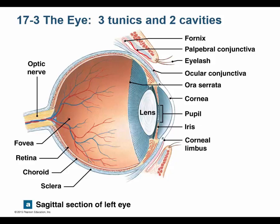You do have conjunctiva lining the inside of your eyelid and your eye. It looks like the conjunctiva stops at the cornea, but the ocular conjunctiva does cover your cornea — it just becomes thinner there, only a couple of cell layers thick, compared to maybe ten layers thick elsewhere. Conjunctivitis is inflammation of this layer.